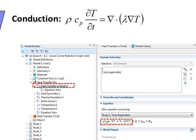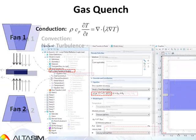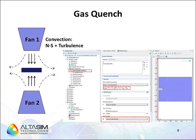COMSOL includes these capabilities in the heat transfer in fluids node. The full equation in COMSOL includes the effects of convection as well. To include the convective heat transfer, the analysis must solve the turbulent flow around the pancake. In the full heat transfer equation, the velocity of the flow is included. The velocity provided comes from the solution of the Navier-Stokes equation for the turbulent flow using the K-epsilon model available in the heat transfer module. With the release of version 4.3b, COMSOL now has the shear stress transport turbulent model that will provide additional capabilities for these types of heat transfer analyses.